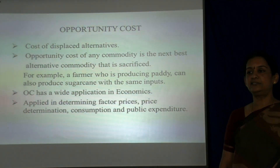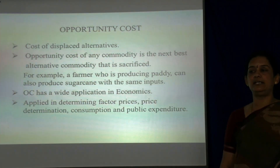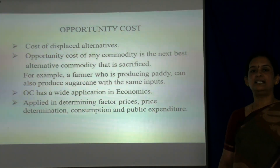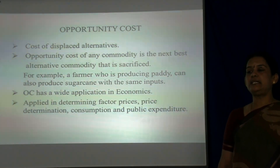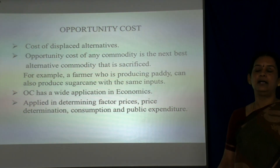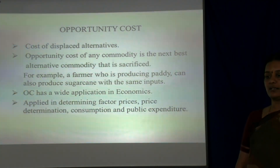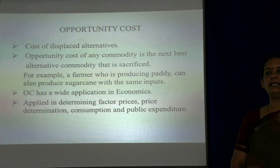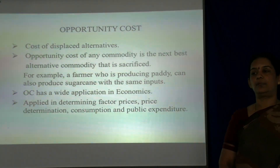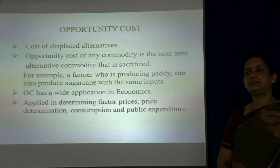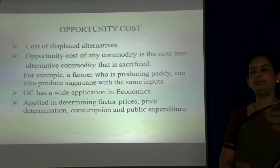Next is opportunity cost, otherwise called cost of displaced alternative. Opportunity cost of any commodity is the next best alternative commodity that is sacrificed. For example, a farmer who is producing paddy can also produce sugarcane with the same inputs — he can only change the seed, that is sugarcane seed, while all other remaining inputs are constant. Opportunity cost has wide application in economics, applied in determining factor prices — land gets rent, labour gets wages, capital gets interest, and an entrepreneur gets profit — and it is used for price determination, consumption and public expenditure.